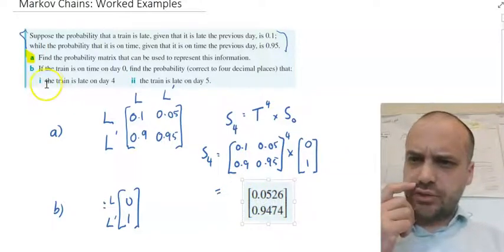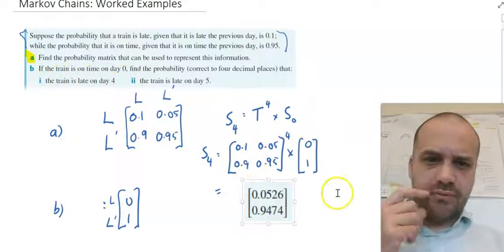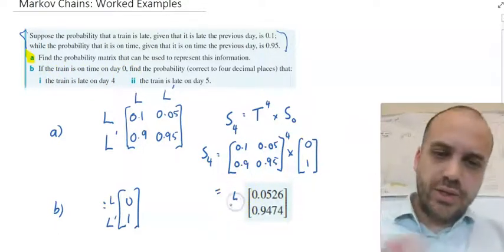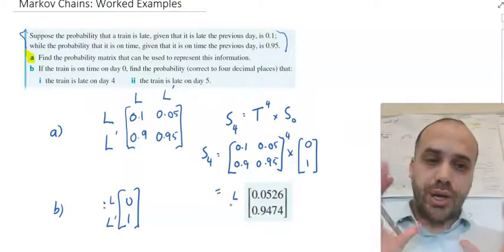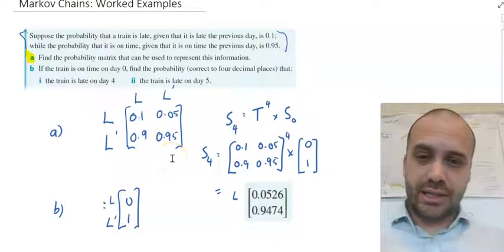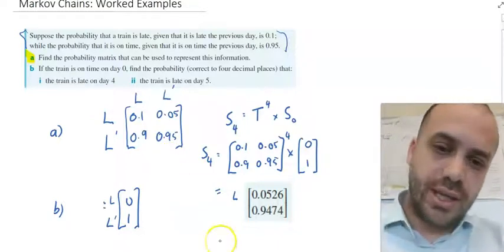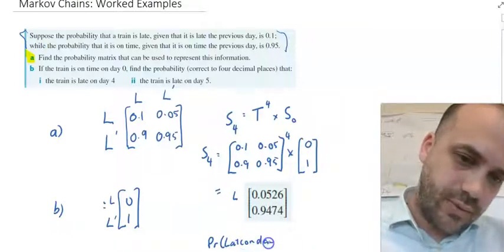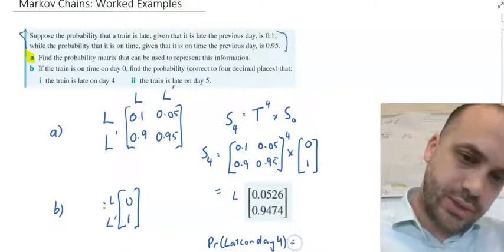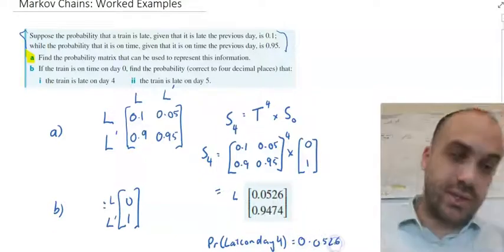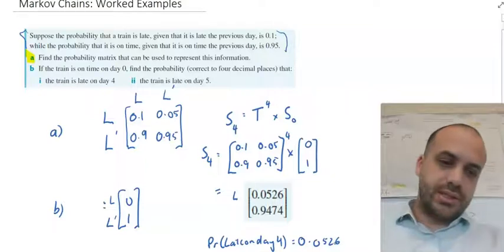What was the question again? The train is late on day 4. So late is up the top here. Late. So we have to finish by answering the question. The probability that this train is late on day 4 is equal to 0.0526 or 5.26%.